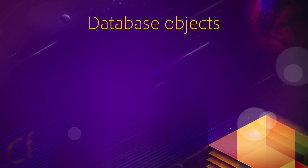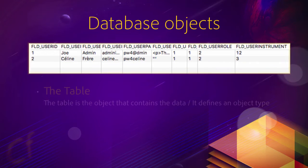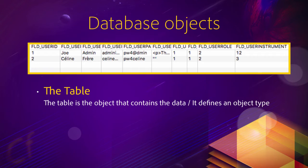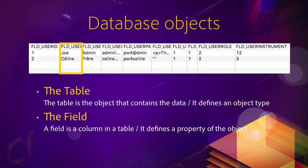A database is made of objects, and at the heart of the database system we have the table object. It looks like an Excel spreadsheet. The table is the object that actually contains the data, and it also defines a type of object. In this example, you have the users table of our database — the database that we will use in the site. You see that this table defines columns, defining what is a user in our application. Each column is called a field in the vocabulary of the database world. A field is a column in a table, and it defines a property of the object.